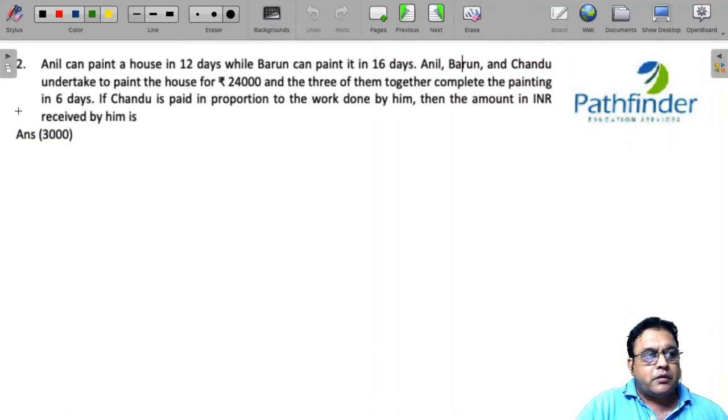CMAT 2021 Slot 3 Quantitative Aptitude Question Number 2. Anil can paint a house in 12 days while Barun can paint it in 16 days. Anil, Barun, and Chandu undertake to paint it for rupees 24,000 and the three of them together complete the painting in 6 days. If Chandu is paid in proportion to the work done by him, then the amount in INR received by him is?